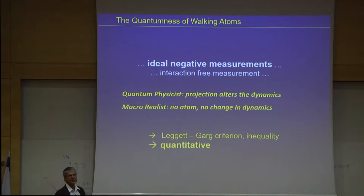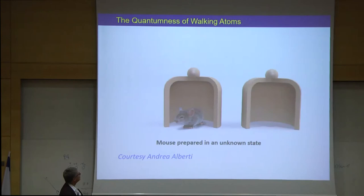What I would like to associate with is the notion that was introduced by Tony Leggett on ideal negative measurements. I think we have a very nice implementation of this ideal negative measurement. And on top of the remake, this is the new aspect of what we do here. It's what is also called interaction-free measurement. Not going into details or into subtleties, as were presented in the previous talk, I just take a very simple stand. The quantum physicist thinks that projection always alters the dynamics of your system, even if you don't see the system, because you do a projection to another part of the Hilbert space. Whereas the macro-realist says there is no atom. I haven't seen anything. There is no change in my dynamics.